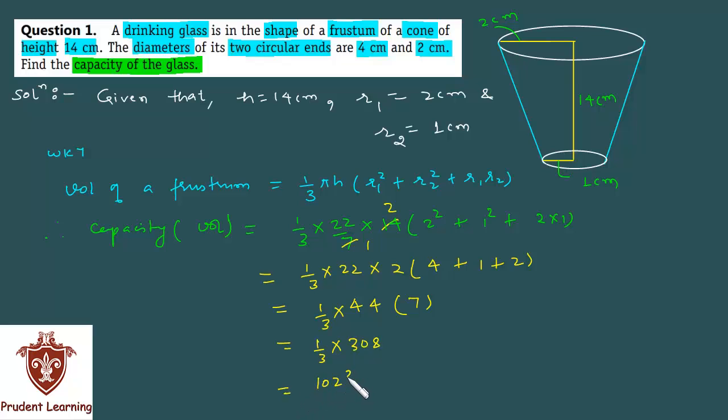This equals 308 by 3, which finally gives us 102 and 2 by 3 centimeter cube. So finally we have capacity of the drinking glass which is in the shape of a frustum as 102 and 2 by 3 centimeter cube.